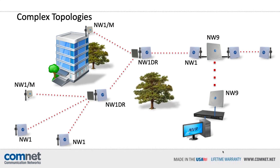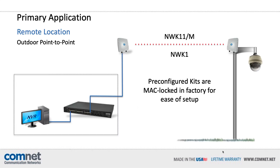The NetWave product line is capable of some very complex topologies combining any of the different devices, but by far the most common product and application is the simple point-to-point solution. The NetWave NWK11-M and NWK1 kits include everything you need to set up a wireless link. The kits are pre-configured in the factory and MAC-locked so that installation on the bench or in the field is simple, quick, and reliable. These pre-configured kits have allowed installers with no previous experience using radio frequency products to successfully implement a wireless Ethernet media converter solution. If there's a K in the NetWave model number, it's a simple-to-use kit.